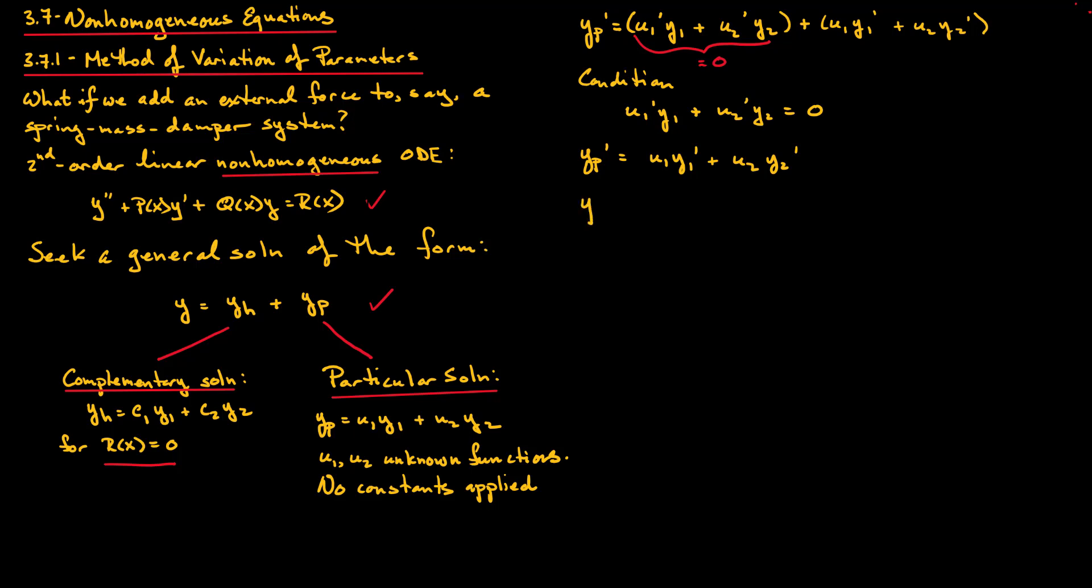As we will be substituting this proposed solution YP into the second-order ODE, we will need the second derivative. Again, using the product rule, we have YP'' = U1'Y1' + U1Y1'' + U2'Y2' + U2Y2''.